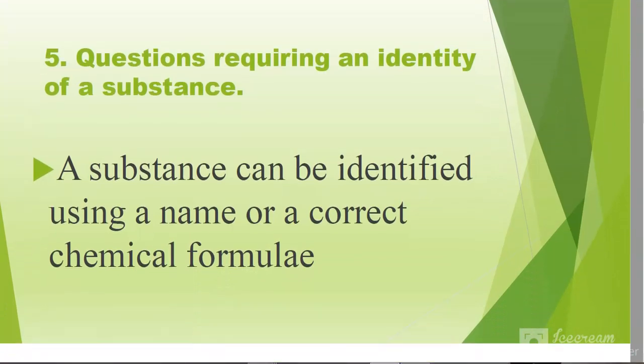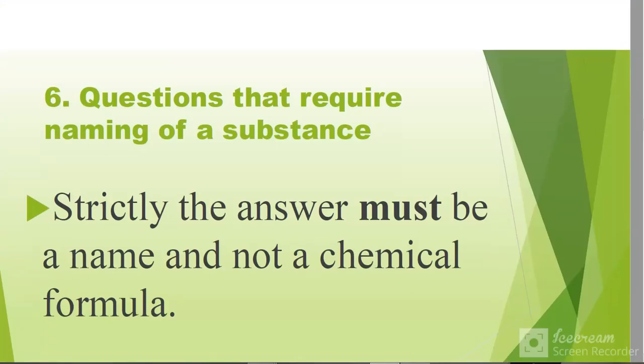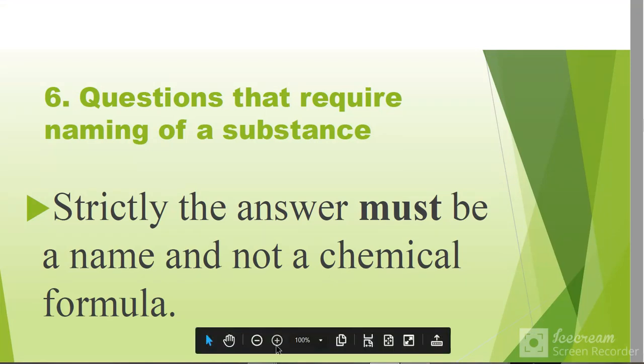A question requiring an identity of a substance: a substance can be identified using a name or a correct chemical formula. But if you are asked to name and you give a chemical formula, you score zero. A question that requires naming of a substance: strictly, the answer must be a name and not a chemical formula.